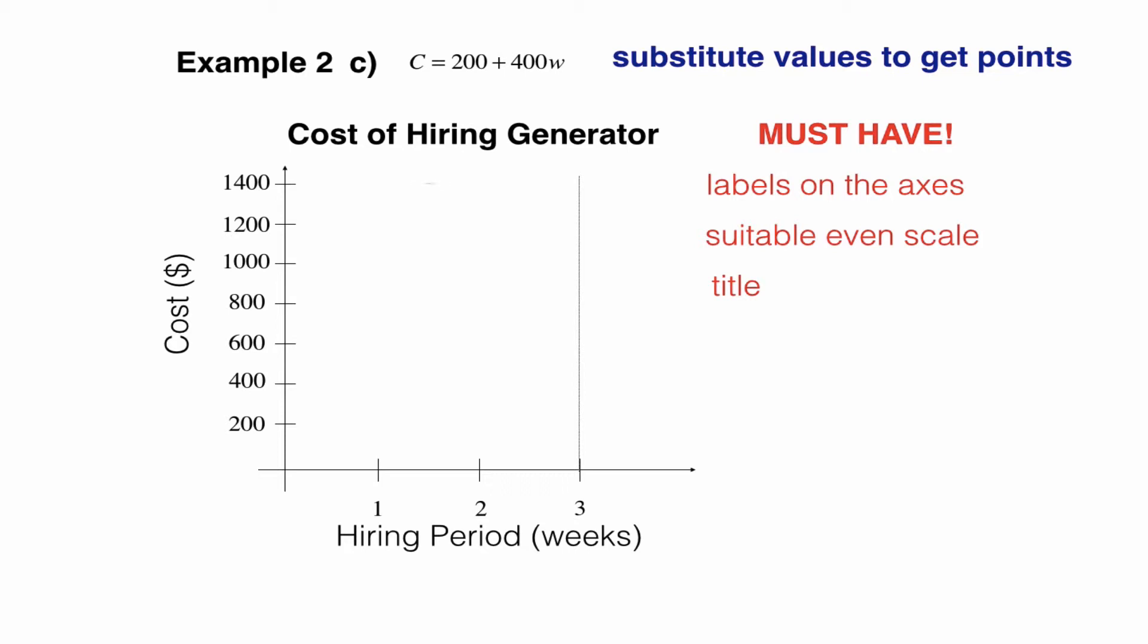Once you've done that, we can plot some points, and I've drawn the first point in there, and then plotted a few other points for different values of W. And once we've done that, we can join the dots to get our straight line. So it's very important that you label your axes and give your graph a title, and that you have a suitable even scale, and you must use a ruler.